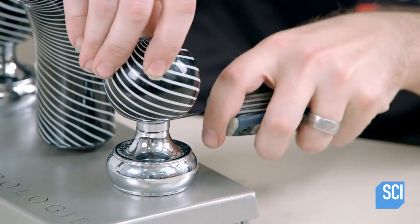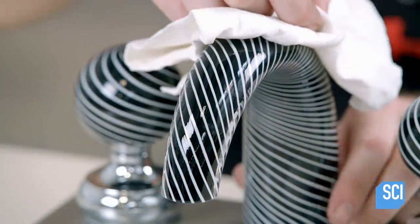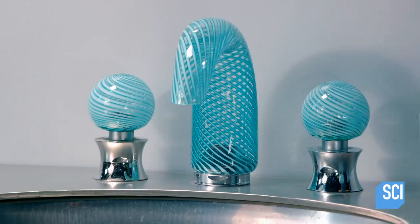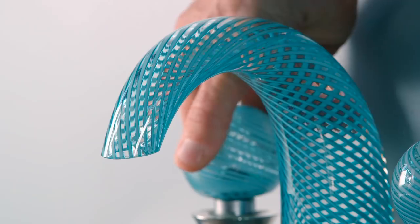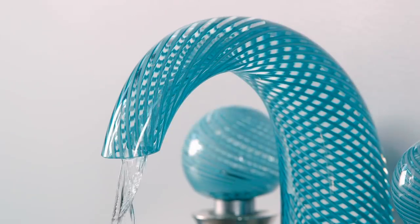The craftsman uses a rag to clean the faucet of any fingerprints and smudges. Finally, construction is complete. This unique glass faucet is ready to make a statement.